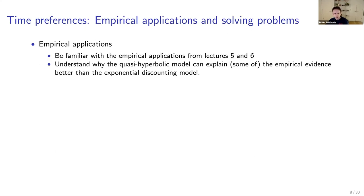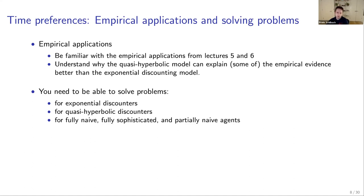Next, we discussed empirical applications from a range of different settings in lectures 5 and 6. We want you to be familiar with those empirical applications and understand whether the quasi-hyperbolic model can better explain the empirical evidence than the exponential discounting model, and why the quasi-hyperbolic model is a good fit for some of those examples.